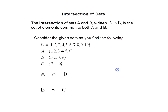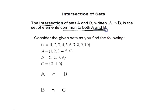The intersection of sets A and B, written A intersect B, is a set of elements common to both sets A and B.